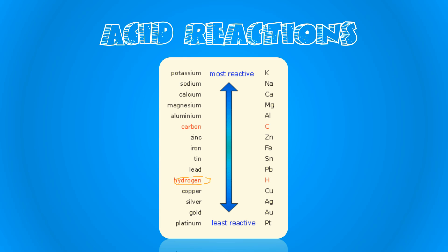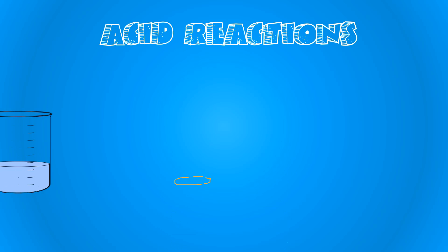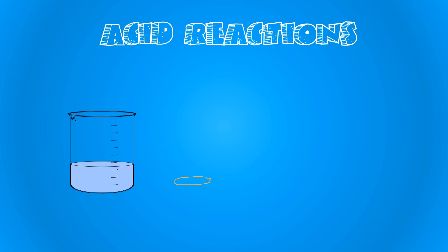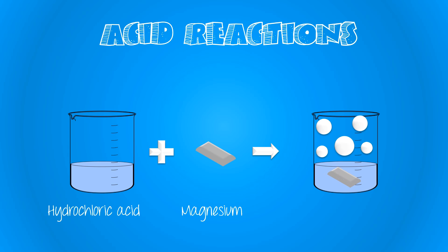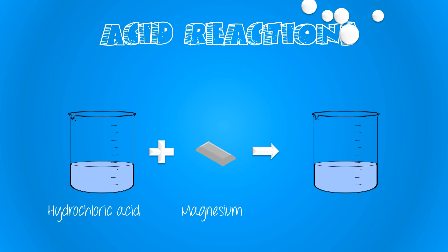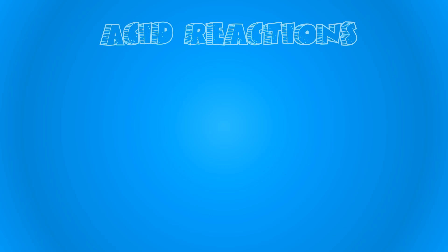Let's have a look at an example. If we have hydrochloric acid reacting with a piece of magnesium, what we will see is that we will produce hydrogen gas, which can be seen through bubbles, and the magnesium will dissolve to form the salt. In this case the salt is called magnesium chloride.